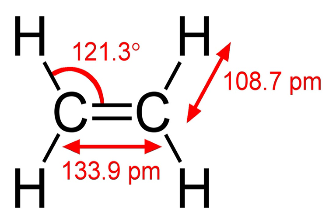Products of these intermediates include polystyrene, unsaturated polyesters, and ethylene propylene terpolymers. The hydroformylation of ethylene results in propionaldehyde, a precursor to propionic acid and n-propyl alcohol.